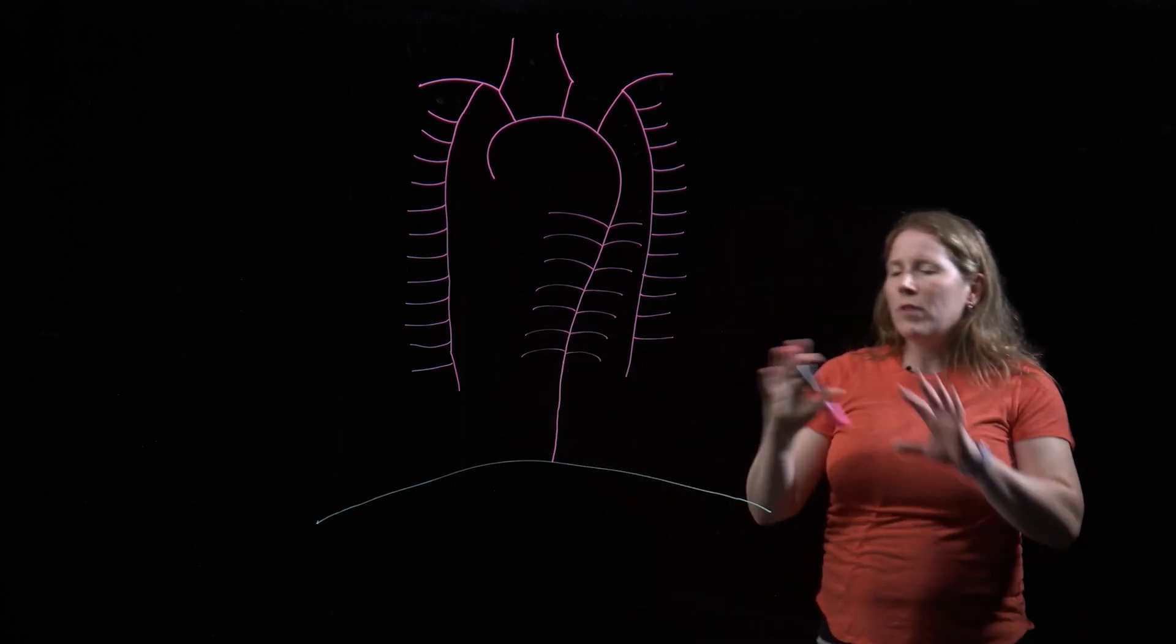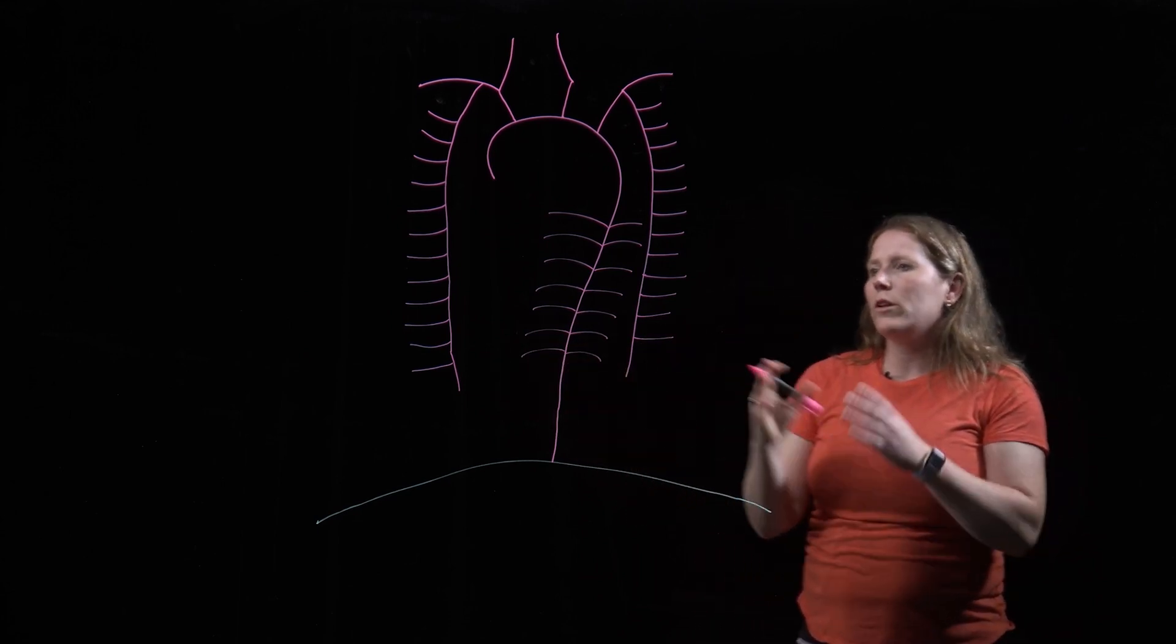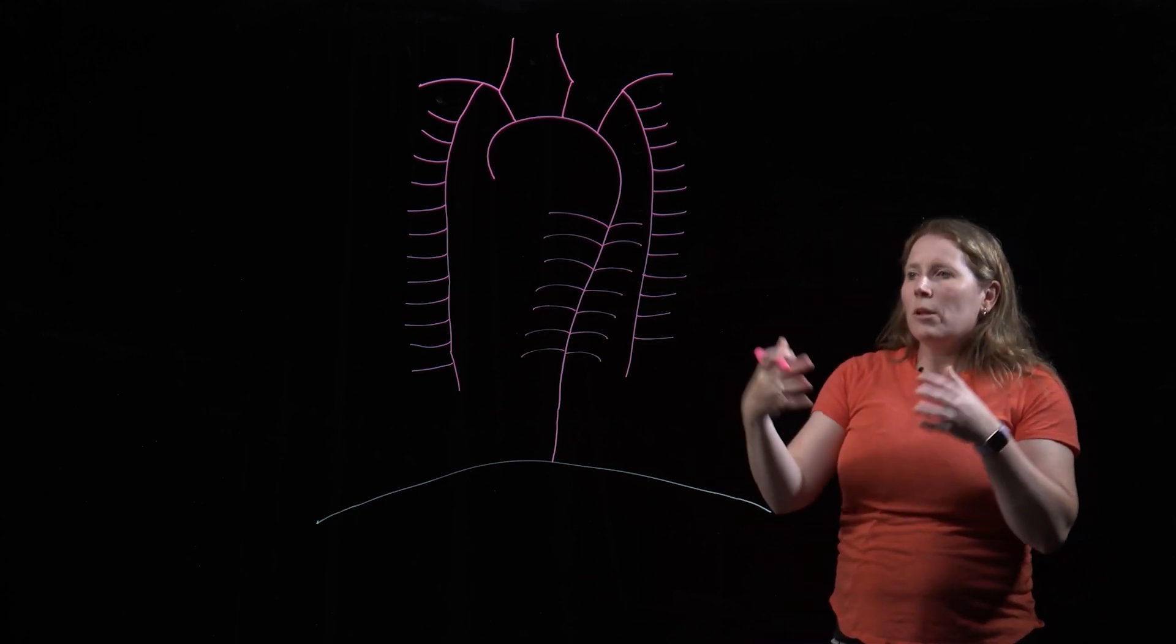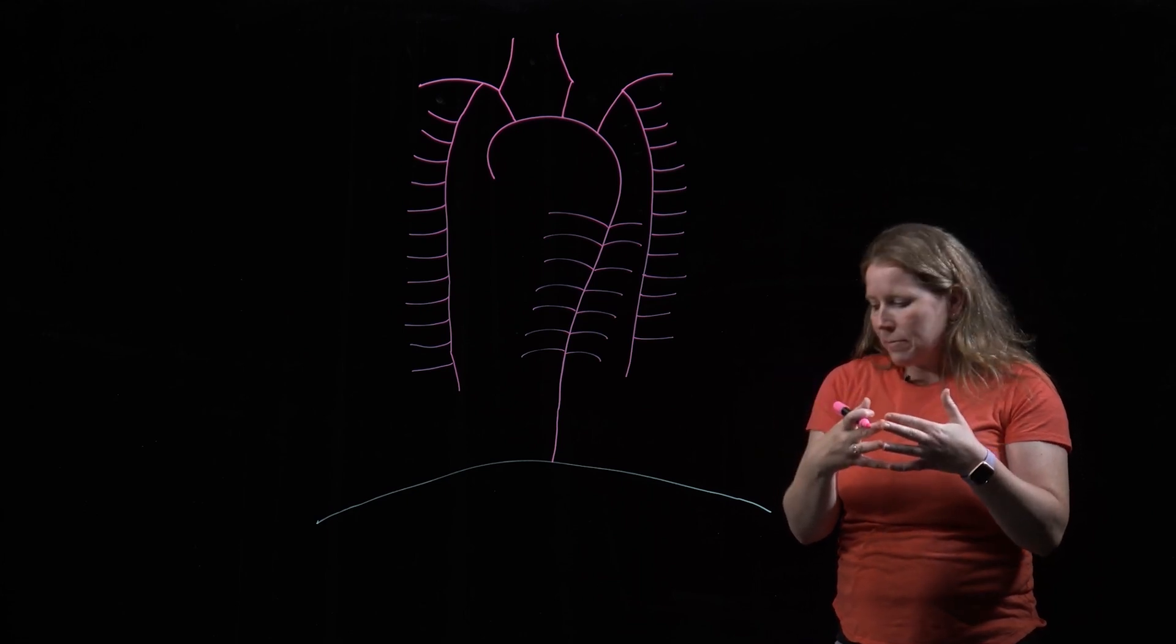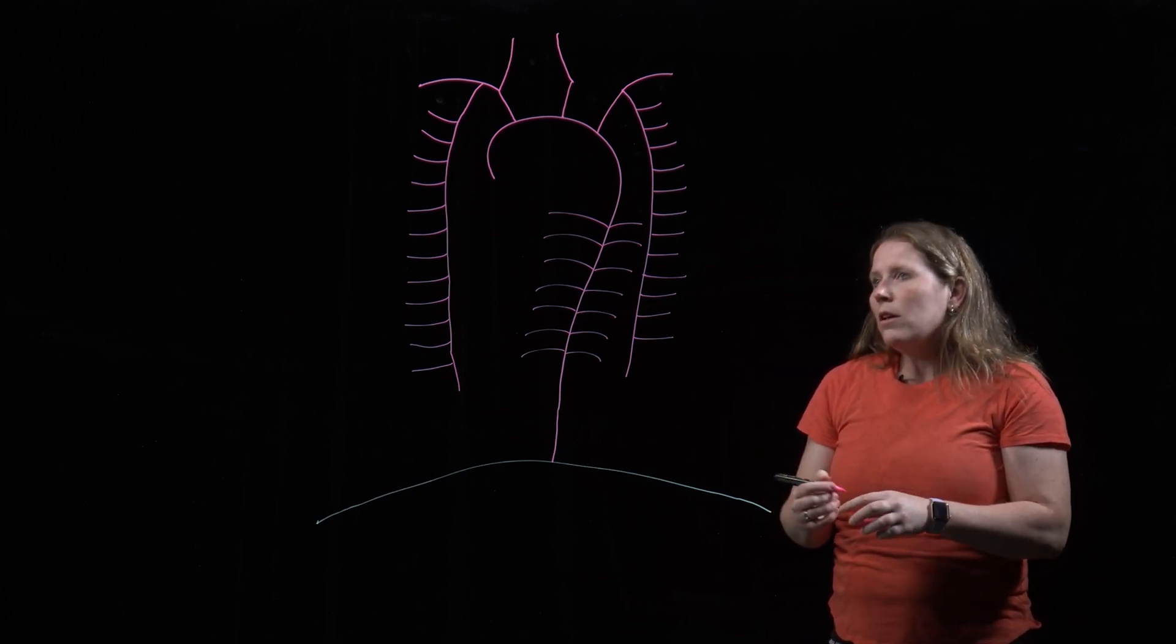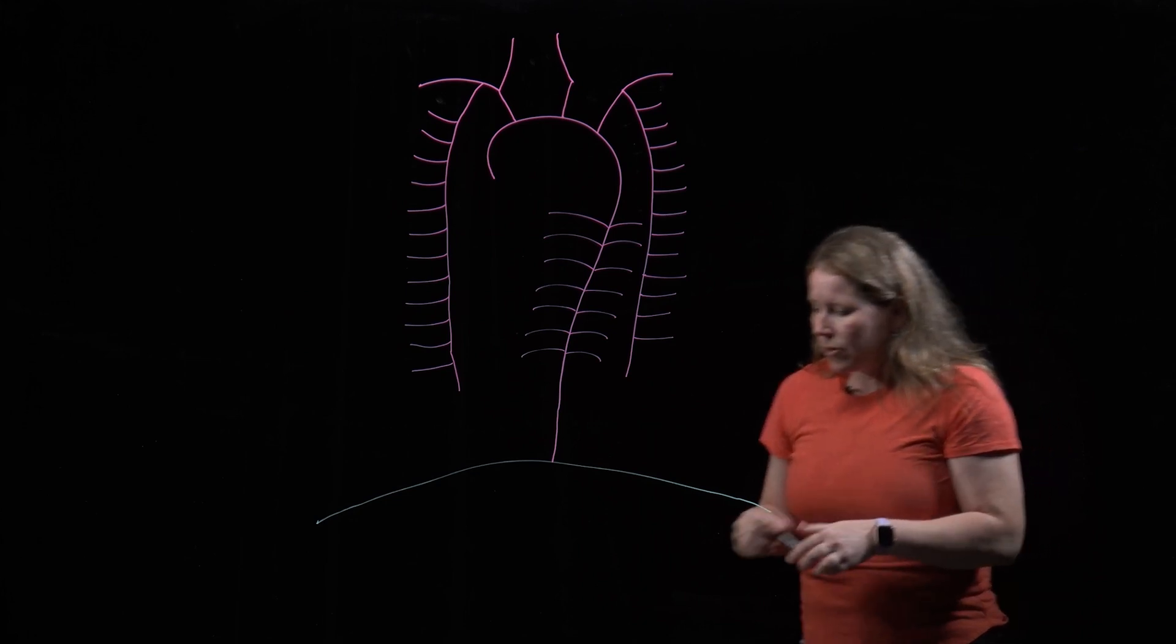And eventually, if we could draw this more three-dimensionally, we know that the anterior intercostal arteries and the posterior intercostal arteries would actually have an anastomosis. So those are the arteries that run in the ribs and where they come from.